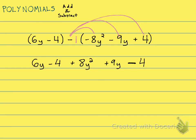Now we're ready to combine our like terms. We don't have any like terms with 8y squared, so that's just going to drop down—here's my 8y squared. Then I see that I have 6y plus 9y—those are like terms—that's going to give me 15y.